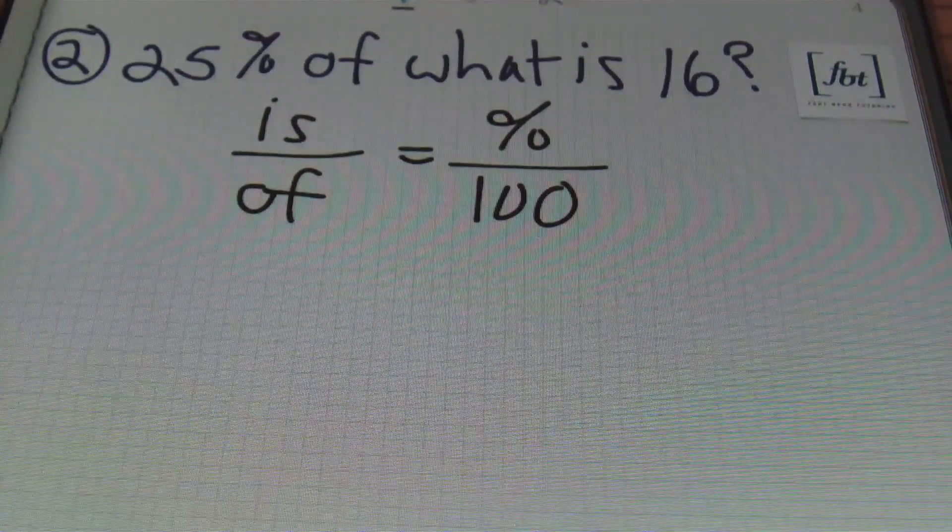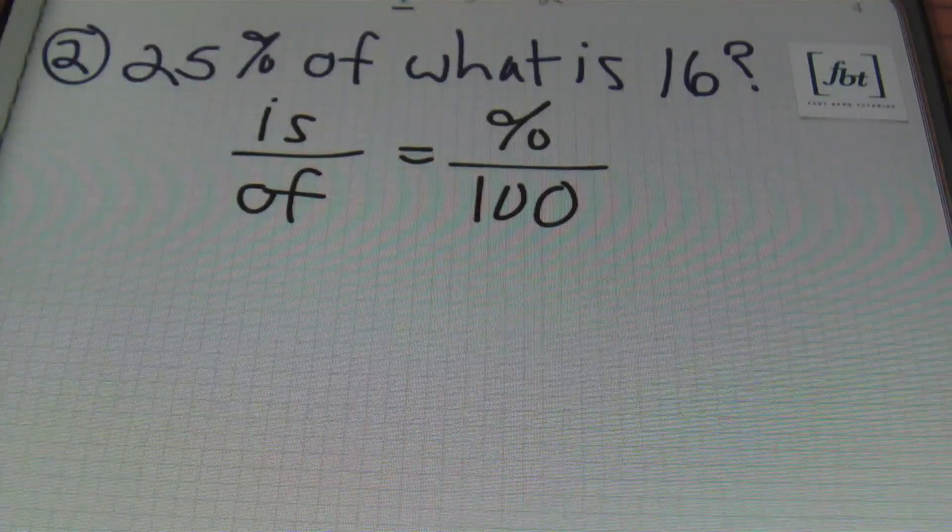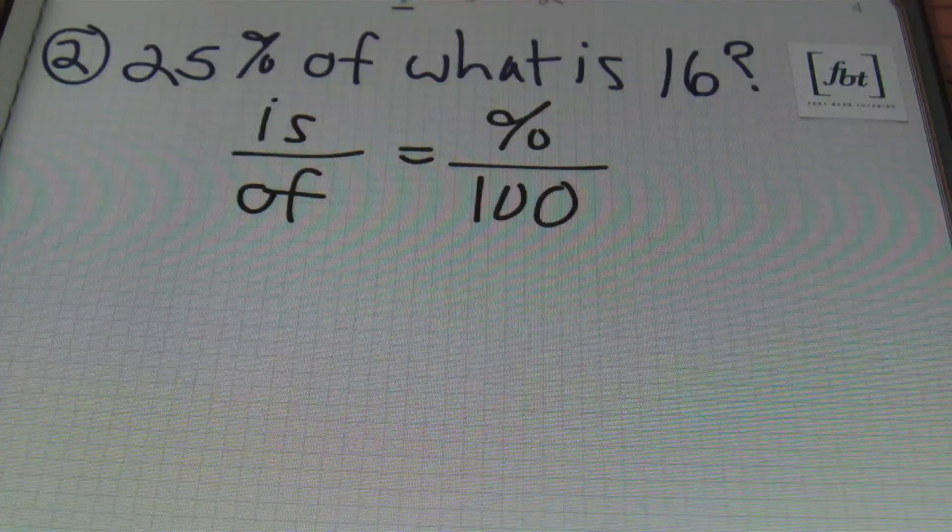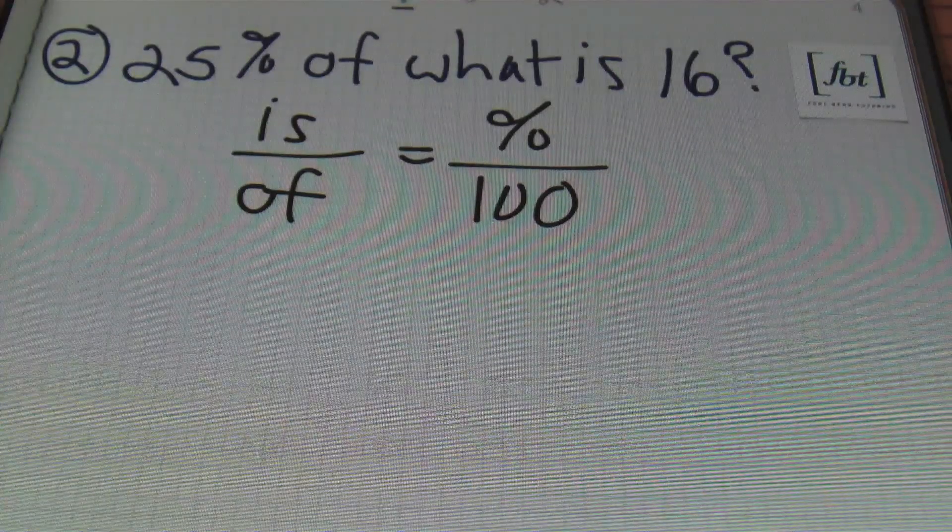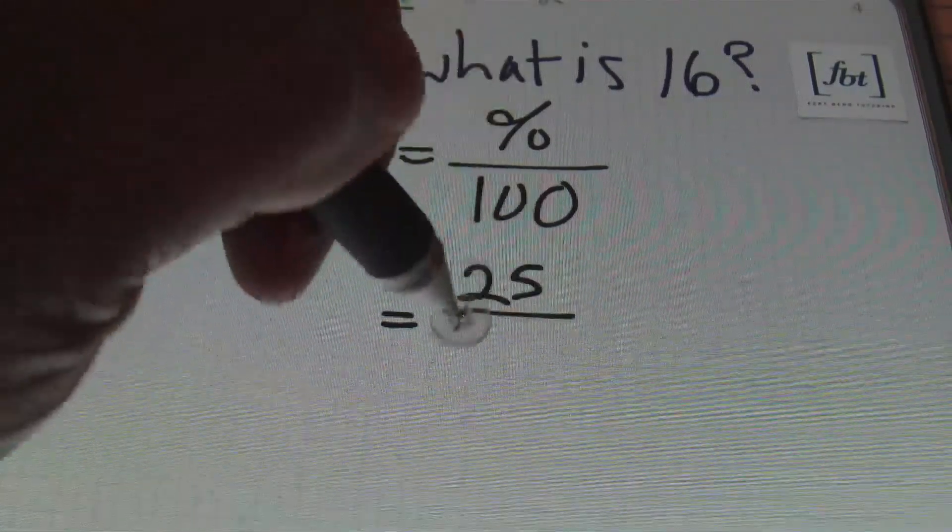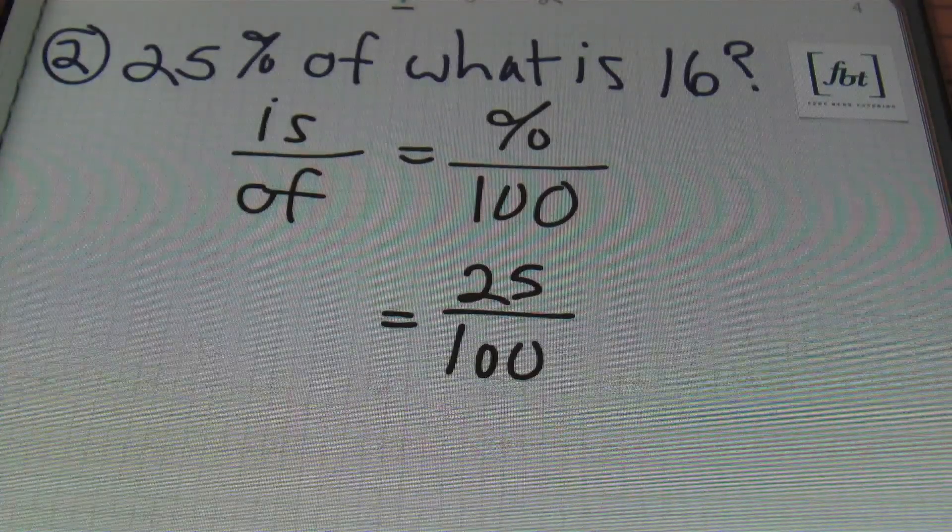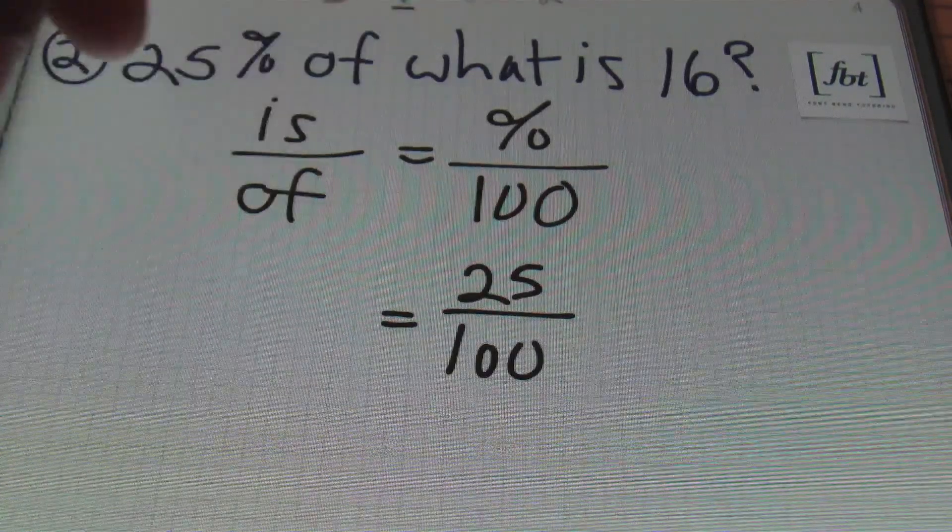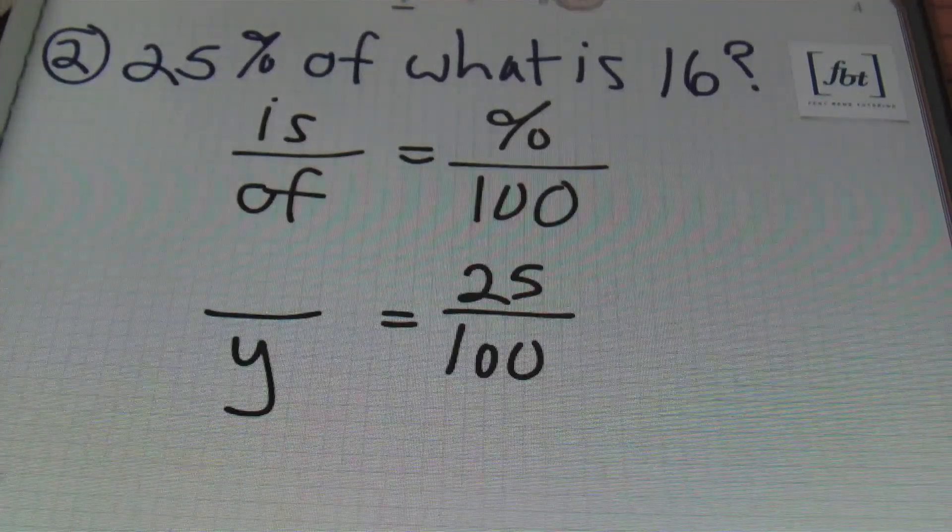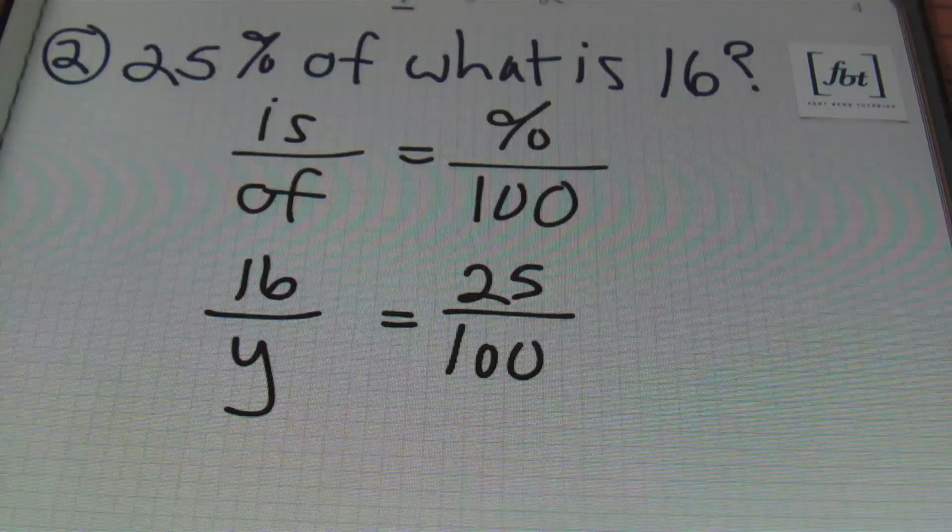Problem number two again, this time with the percent proportion. Remember, 'is' over 'of' equals the percent over 100. I advised you to always start with your percent first - it's the easiest thing to identify. So I'll be plugging in 25 over 100 here. Then this says 'of what' - I don't know what 'what' is, so that's my variable. So I'll use the variable for my 'of' in this case. And it says 'is 16', so my 16 is my 'is' value.